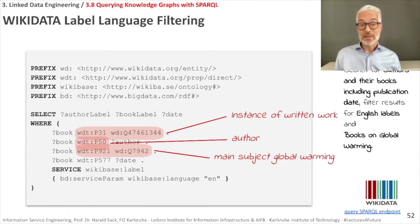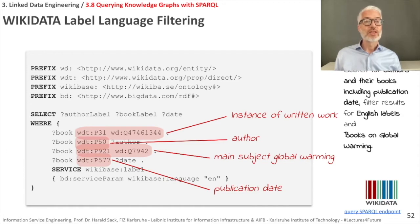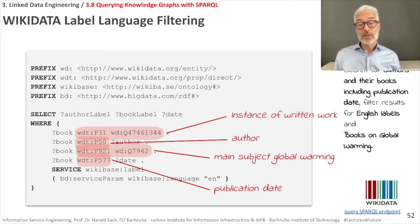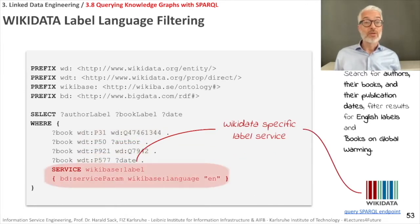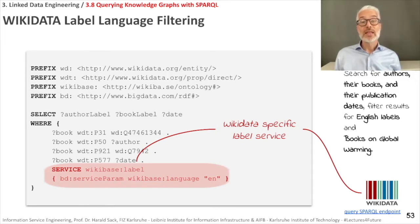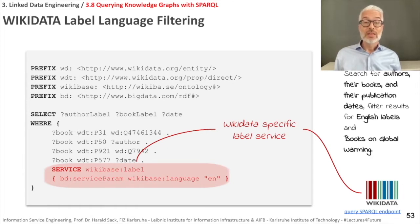Next we look for the property P50, which corresponds to 'author', connecting the variable book with the variable author. The main subject property is P921, and global warming is the entity wd:Q7942. For publication date we use P577 as a property. All these graph patterns are combined conjunctively, as in the DBpedia case. There is also the service term 'wikibase label' with a service parameter for language — we want only English labels.